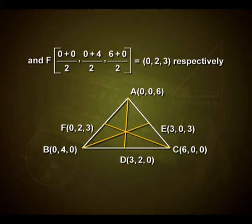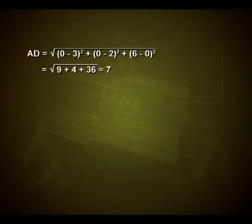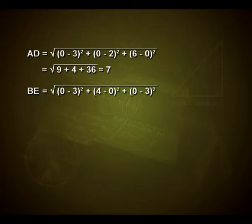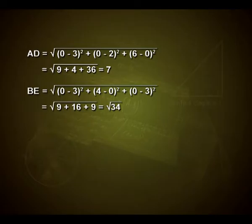In the figure we can see the triangle with vertices A, B, C and midpoints D, E, F. The length of median AD using the distance formula is √[(0−3)²+(0−2)²+(6−0)²] = √(9+4+36) = 7. The length of median BE = √[(0−3)²+(4−0)²+(0−3)²] = √(9+16+9) = √34.